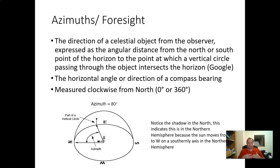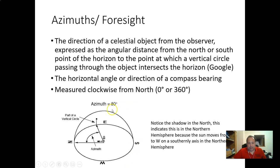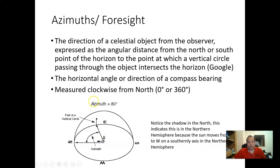The first directional system we'll focus on is azimuths. I prefer azimuths because they're simpler — measured clockwise from north, which is zero degrees or 360. So an azimuth of 80 degrees is simply an angle of 80 degrees clockwise from north. The azimuth is always measured clockwise, and it ranges from 0 to 360 degrees.